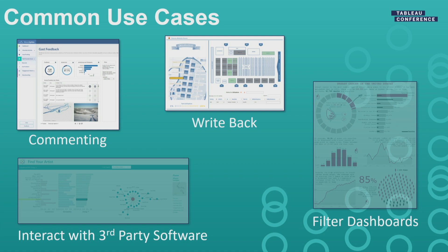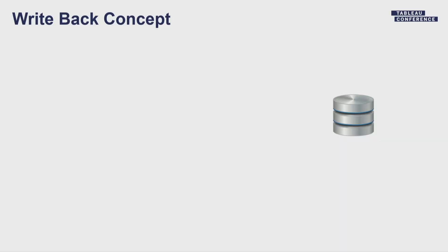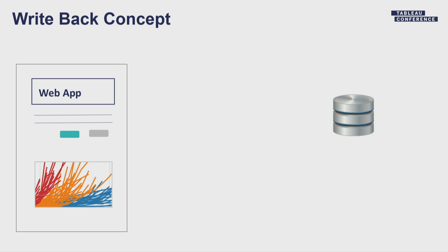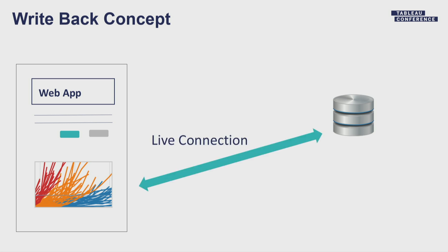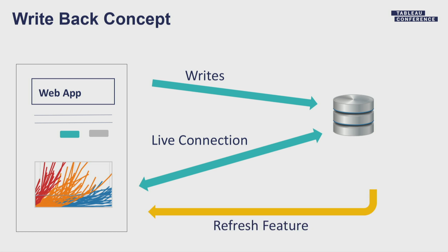The second most common scenario people are really interested in is write-back. In case you're not familiar with it, here's an example: let's say you have a viz with some inventory data, and when you look at it, you want to update the inventory data in your custom portal, and once updated you want to see the data back on your viz. You would start with a custom web application with your viz embedded in it, and you would have a live connection to a database — SQL, Google Sheets, Excel, anything. You have your custom write logic that writes data back to your database, and the JavaScript API allows you to trigger a refresh on the viz through the refreshDataAsync API. Once the write finishes, you trigger that and the viz will refresh and pull in the new data you just wrote.